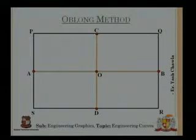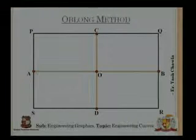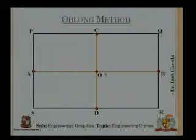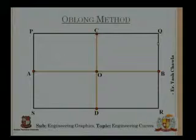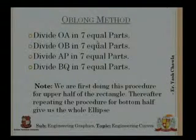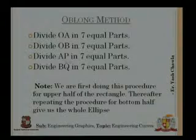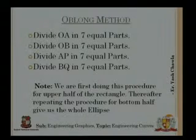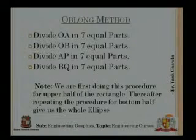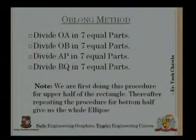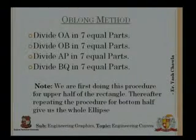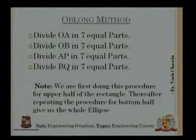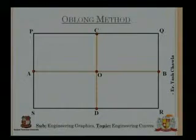Now we are going to divide these segments. First we consider the upper portion, then the lower portion. We divide AO, OB, AP, and BQ into seven equal parts each. We are doing this for the upper side of the rectangle. If we repeat this procedure for the lower half of the rectangle, we will have the points on the ellipse on the lower part.